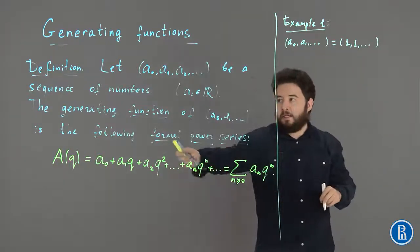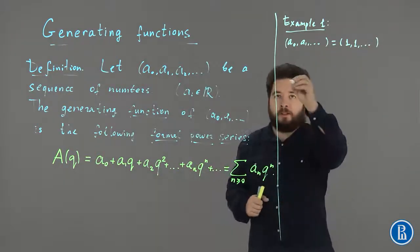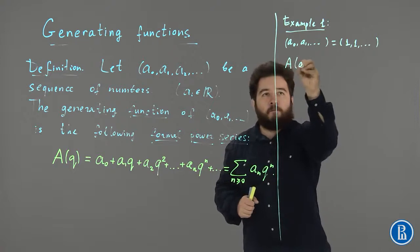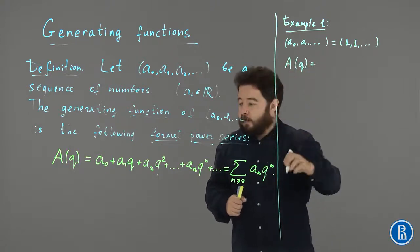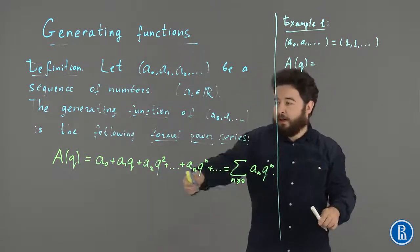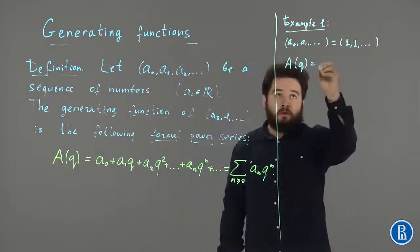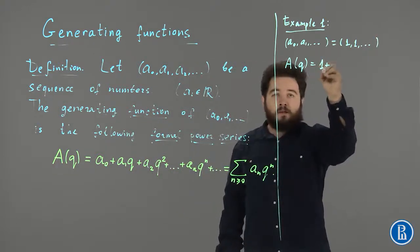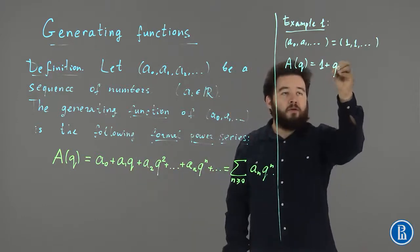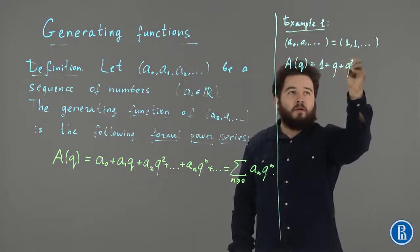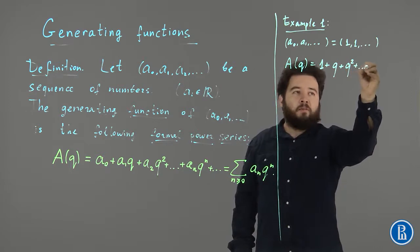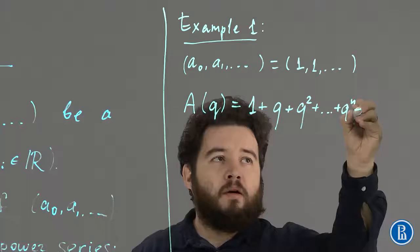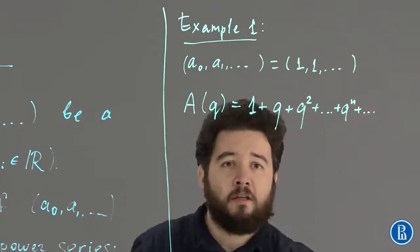In this case, the generating function of this formal power series, A of Q is, well, let's look at this definition, we need to write down 1 plus Q times 1, this is Q, plus Q squared, plus etc. plus Q to the power N, and then up to infinity.